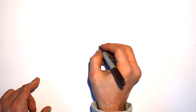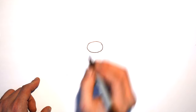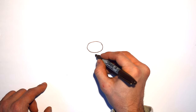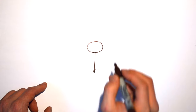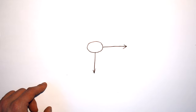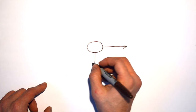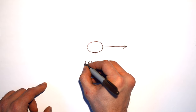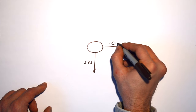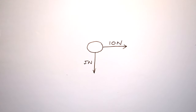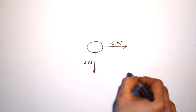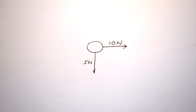Let's say I have an object — a ball. There are two forces being applied to it: one going downwards at 5 Newtons, and one going to the right at 10 Newtons. If these were the only forces acting on this ball, it would accelerate in that diagonal direction. What if I asked you where a third force would have to be applied in order to make sure this ball doesn't accelerate?